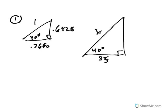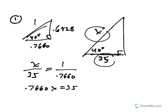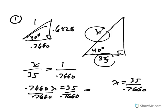The thing to notice is that these are similar triangles because they have all three angles congruent. You can set up a proportion: x over 35 equals hypotenuse over short side equals the other hypotenuse over the other short side. Cross-multiplying gives 0.7660 · x = 35, so x = 35 ÷ 0.7660, which equals 45.7 rounded to the nearest tenth.